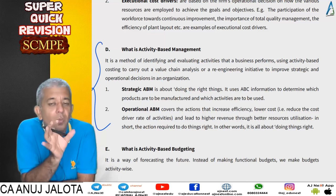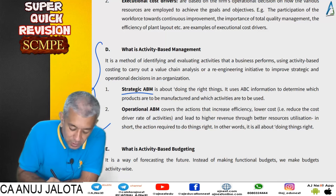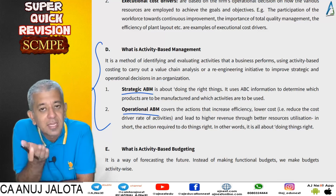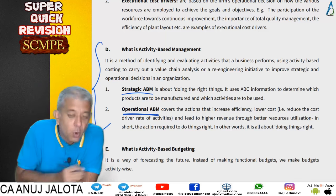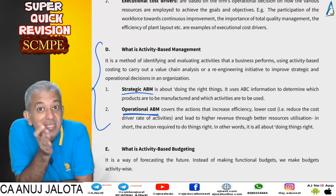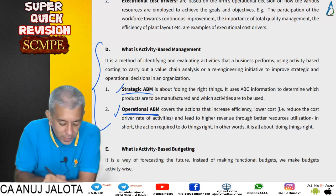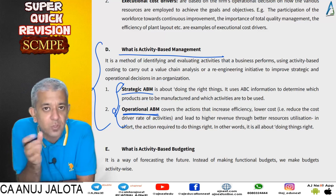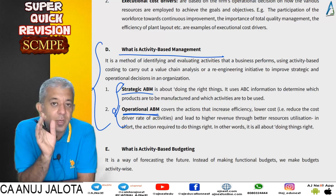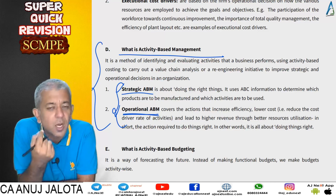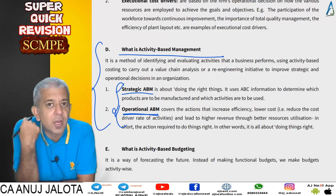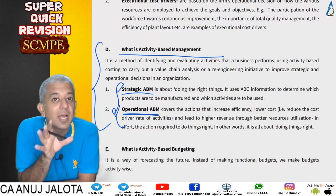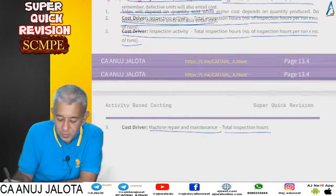ABM works under two kinds of steps. First is strategic ABM — thinking about which activities to do, doing the right activities. Second is operational ABM — determining how to do those right activities correctly. Together, both these things form activity based management. Proper use of ABM will sometimes help you realize you need re-engineering: thinking about how products are produced, whether there is a better way, a way to reduce cost, produce faster, or achieve better quality.